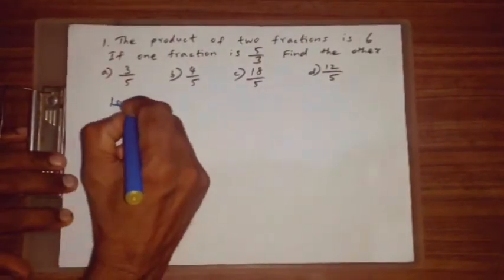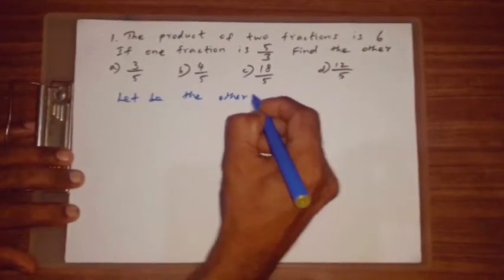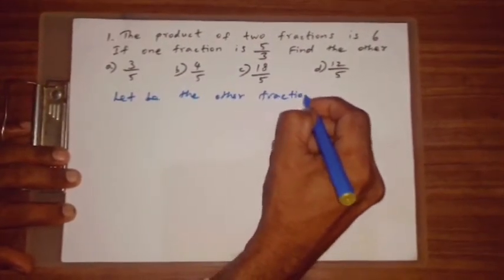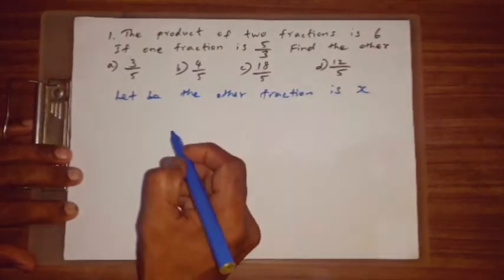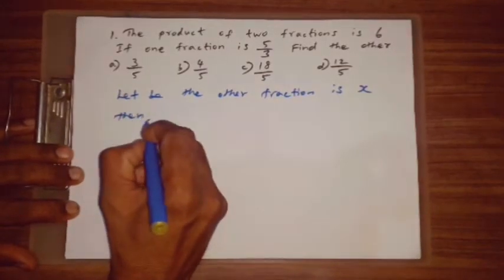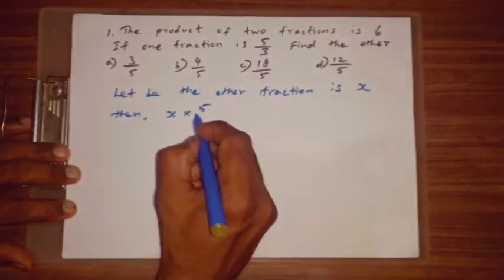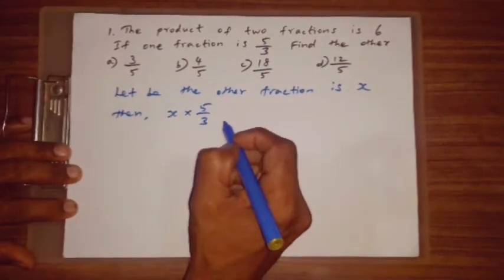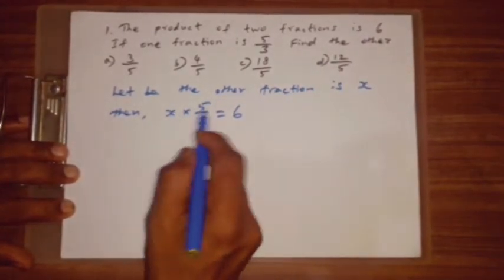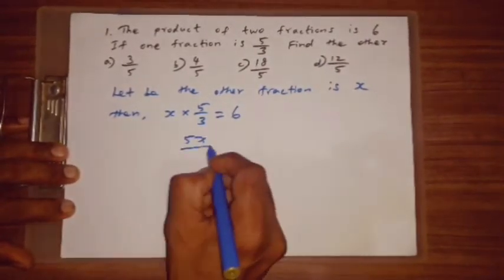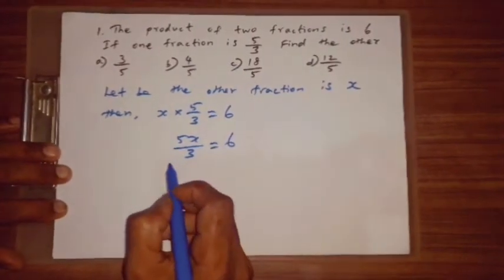Let me, the other fraction is X. Then, X multiply 5 by 3 equal 6.